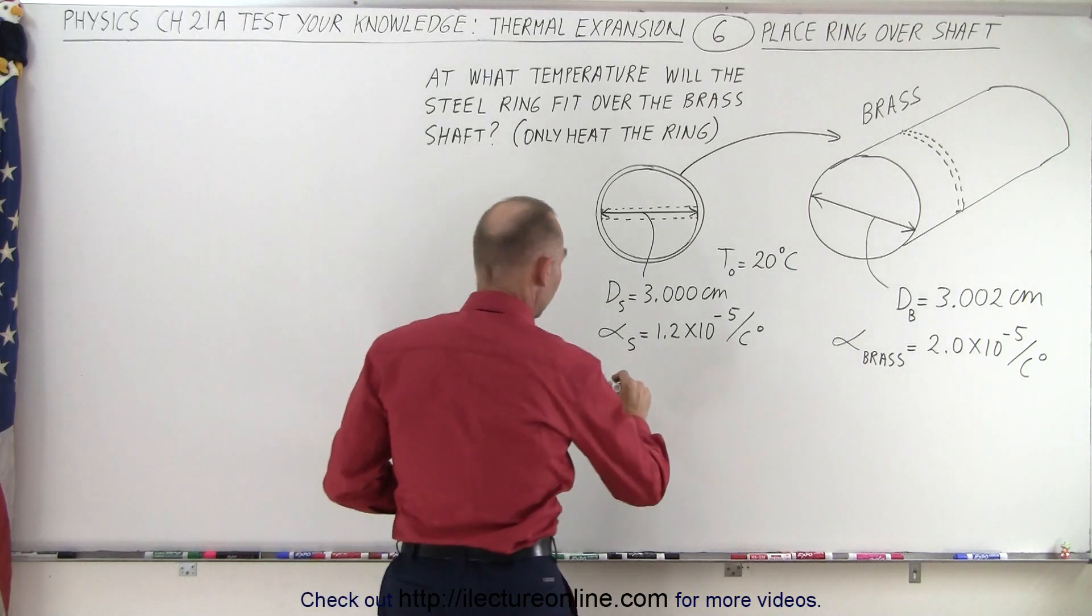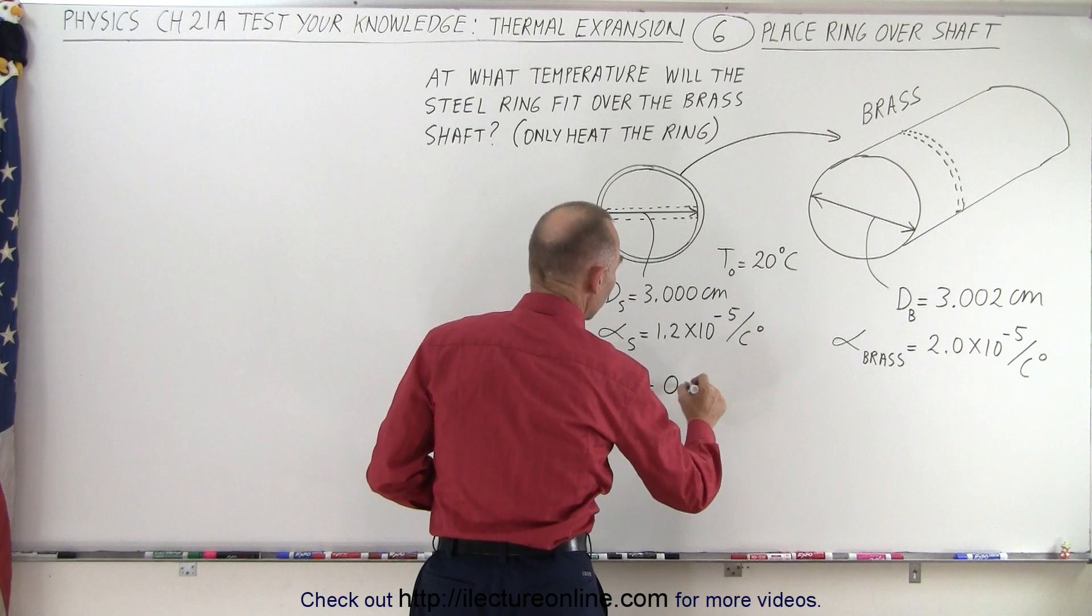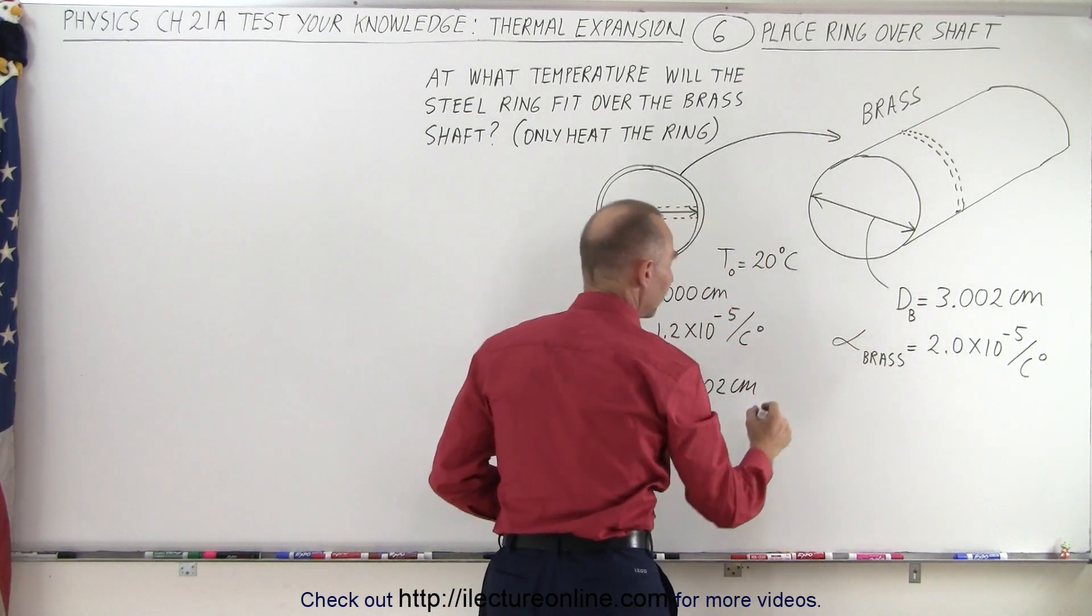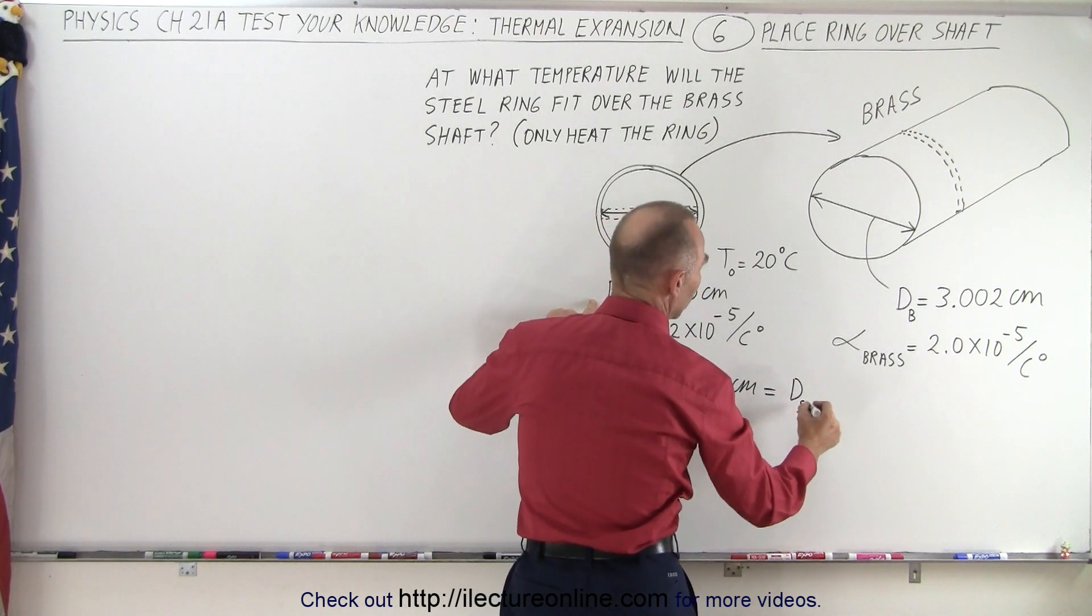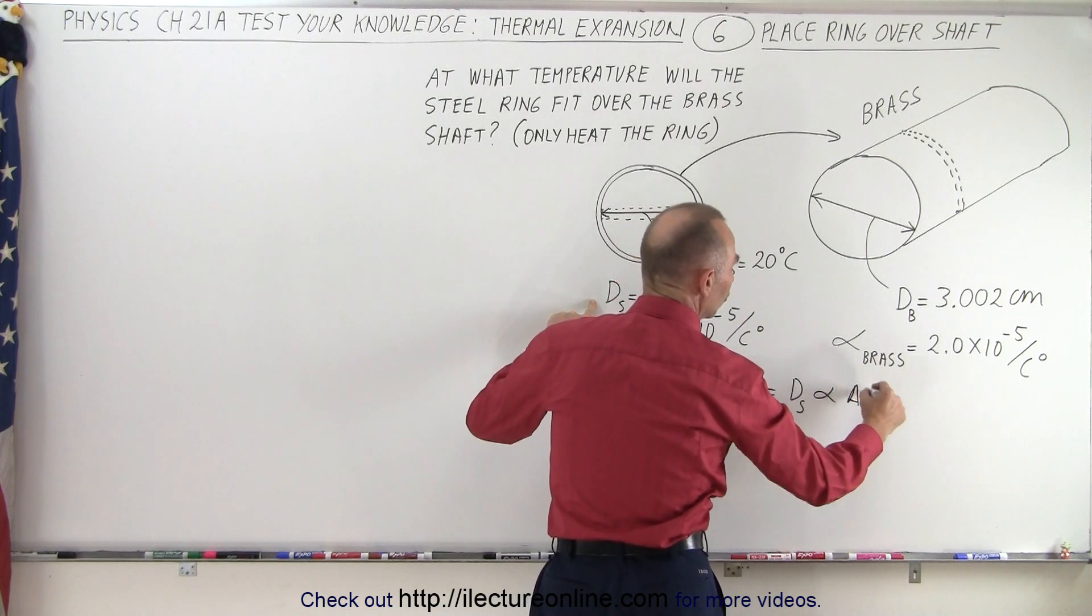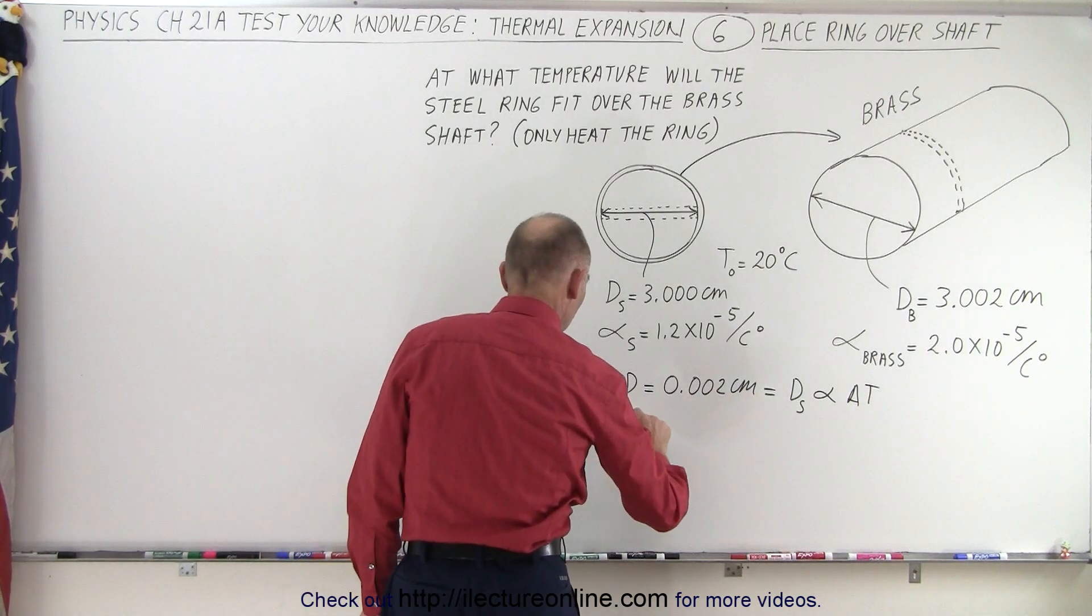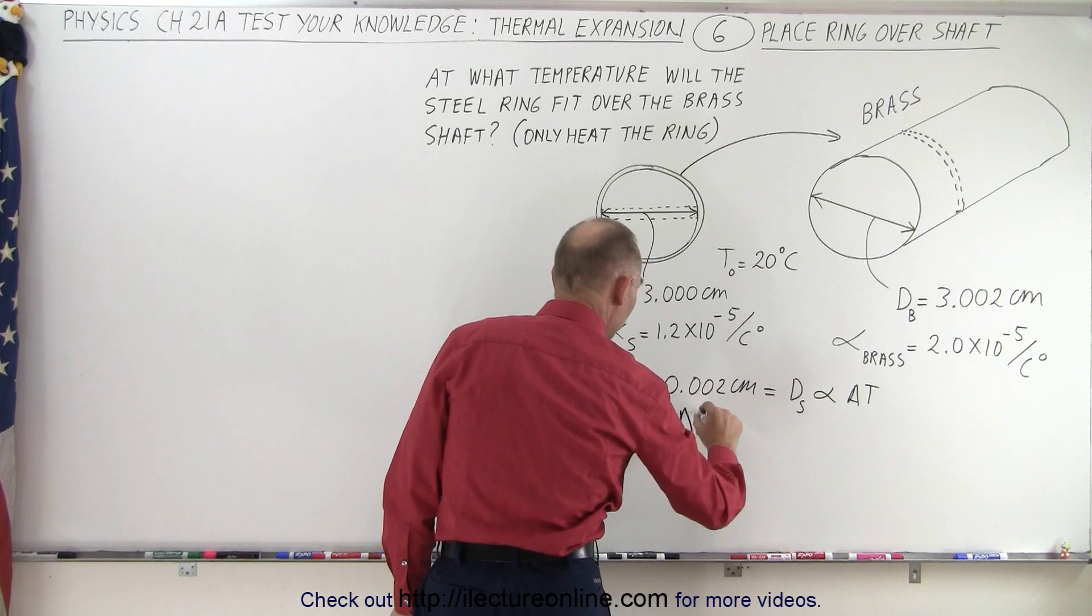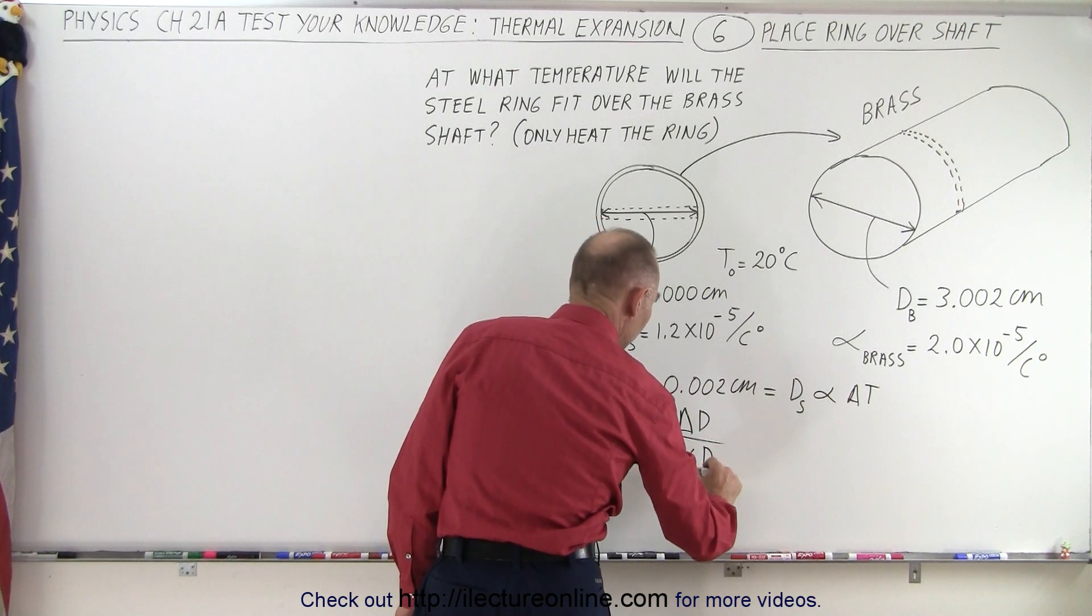In other words, we want the change in the diameter to be equal to 0.002 centimeters, that's what we would need to get over the shaft, which would be equal to the original diameter times the linear coefficient of expansion times the change in temperature. And since we're looking for the change in temperature, the change in temperature would be equal to the change in diameter divided by the coefficient times the original.